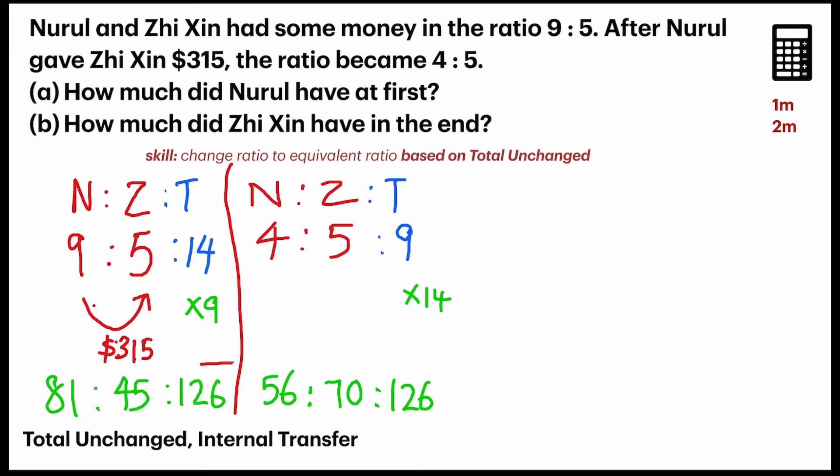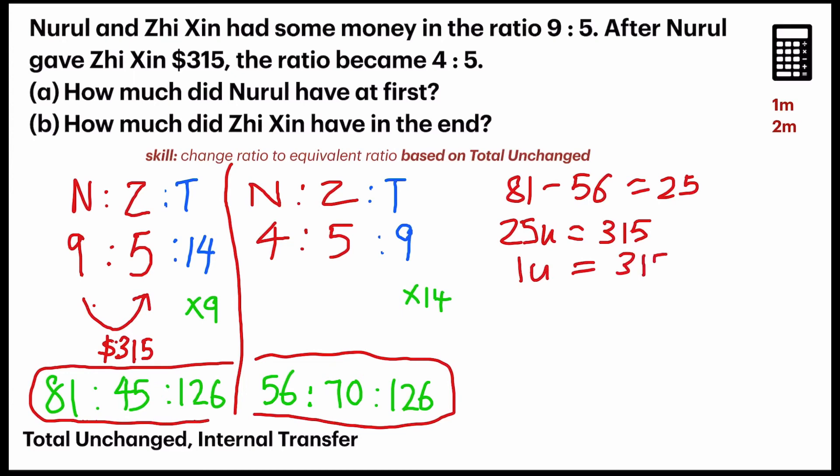So, let's analyze a little bit about our ratio. So, this is the new ratio. So, 81. Nuru had 81, but it became 56. What happened? 81 minus 56. Let's see. The units changed. 25 units deducted. Why? Because of this $315 that's been transferred. So, we can say that 25 units is equal to $315. And find the key, which is 1 unit. $315 divided by 25 gives me $12.60.